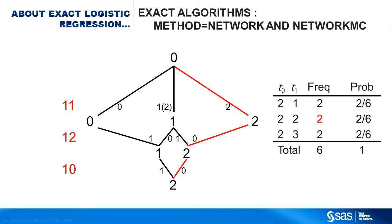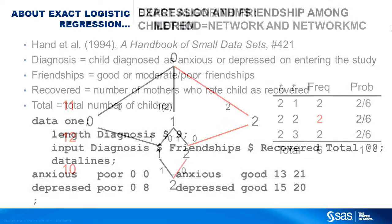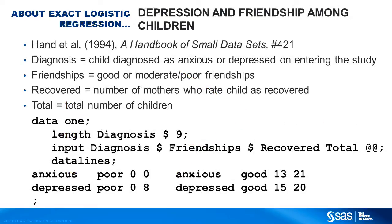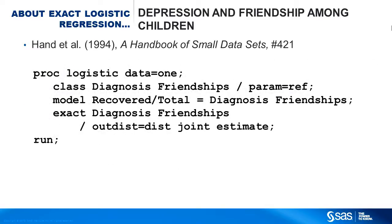So now that you know how the distribution of the c counts is created, let's see how to get the tests and estimates by running an example from a handbook of small datasets. The covariates for this example are whether a child is anxious or depressed before entering the study, and whether the child has good or poor friendships. The response variable is whether the mothers think their children have recovered or not. Unconditional and exact logistic models are fit.